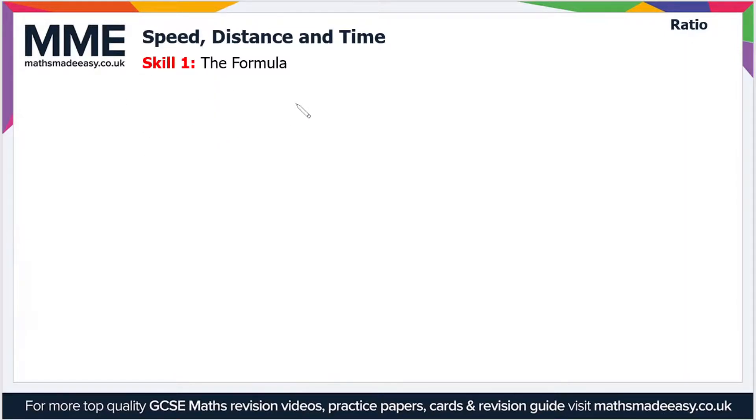Speed is a measure of how far something travels in a given time period, so therefore to calculate the speed, we divide the distance travelled by the time taken.